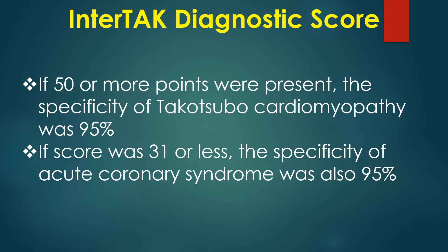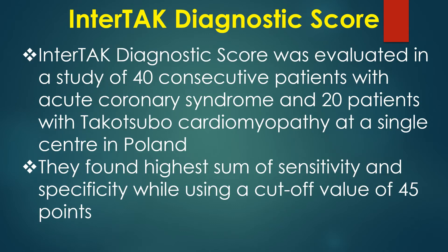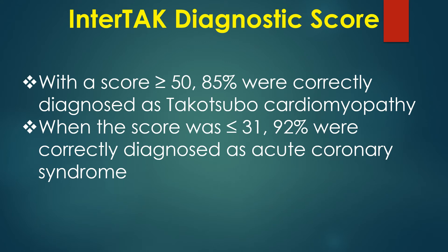If 50 or more points were present, the specificity for Takotsubo Cardiomyopathy was 95%. If the score was 31 or less, the specificity for acute coronary syndrome was also 95%. The score was evaluated in a study of 40 consecutive patients with acute coronary syndrome and 20 patients with Takotsubo Cardiomyopathy in a single center in Poland. The highest sum of sensitivity and specificity was found using a cut-off of 45 points. With a score of 50 or more, 85% were correctly diagnosed as Takotsubo Cardiomyopathy, and when the score was 31 or less, 92% were correctly diagnosed as acute coronary syndrome.